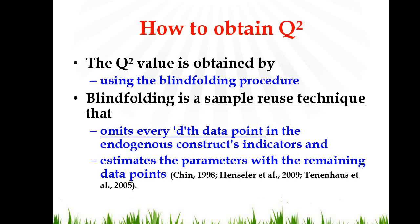How to calculate Q-square? Q-square is obtained by using a technique what we call blindfolding in SmartPLS. What is blindfolding? Blindfolding is a sample reuse technique. It means it creates several samples. How it creates? It omits certain dth data points.